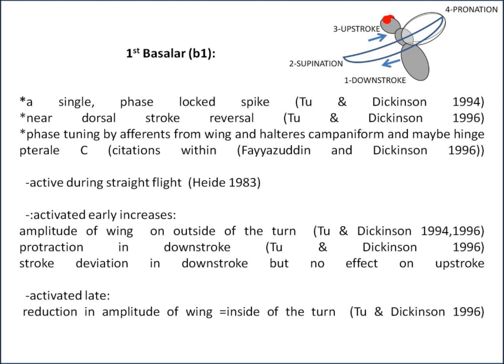If the B1 is activated late, then you have a reduction in amplitude of the wing, so this becomes the wing on the inside of a turn. B1 has also been shown to control the ventral flip timing — so supination.